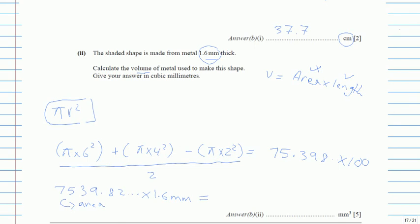Press multiply then 1.6, and you get 12063.7 and so on. This answer rounded to 3 significant figures is 12100. Write '3 significant figures' to make it clear. And those were your 5 marks. If you learned something new from this video, make sure to like it. Thank you.